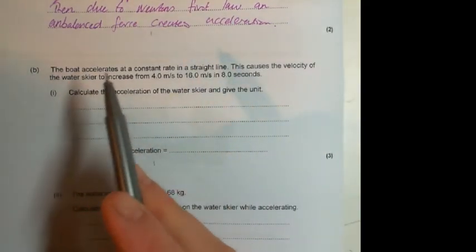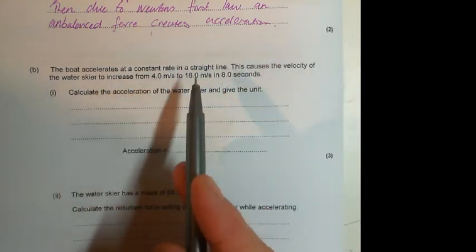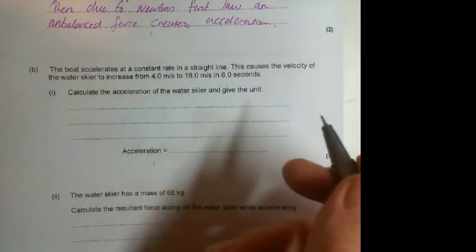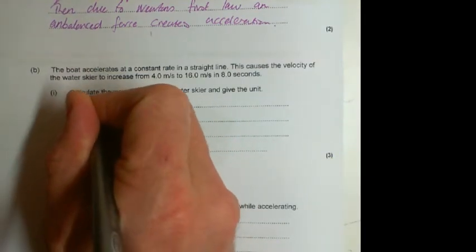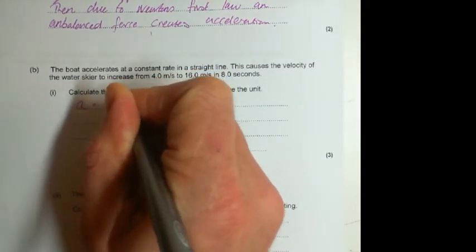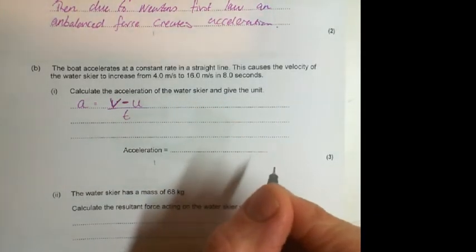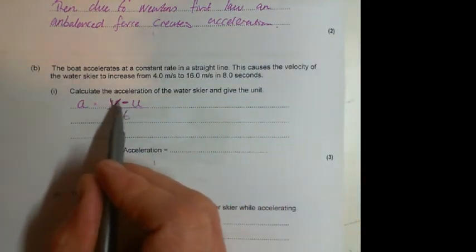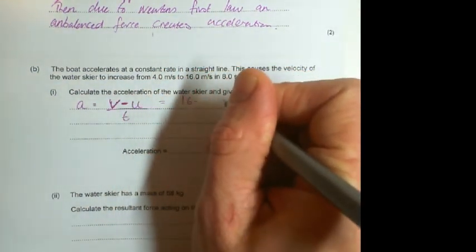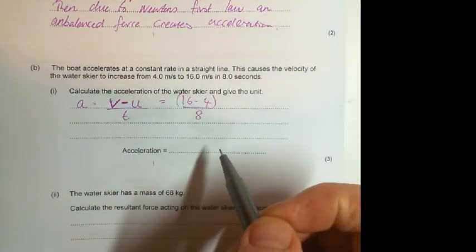Okay, so next up, the boat accelerates at a constant rate in a straight line. This causes the velocity of the water skier to increase from 4 to 16 in 8 seconds. Calculate the acceleration of the water skier and give the unit. So whenever I'm doing these kind of questions, the first thing I'll do is write out the equation I'm going to use. So I'm going to use a = (v - u) / t, where v is my end speed, u is my start speed, and I'll divide that by t, and that will give me my acceleration.